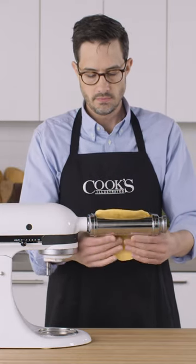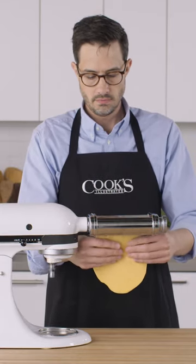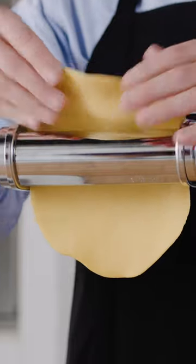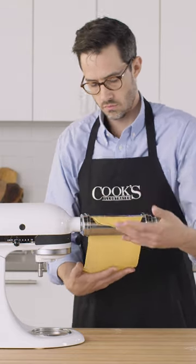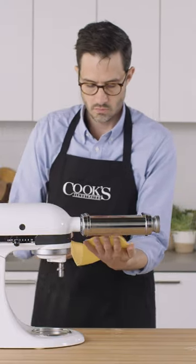Start on the widest setting and run it through twice. That second run is to counteract any elastic spring that brings the dough back to its original shape. Then step to the next level and repeat. Keep going until the dough is the desired thickness.